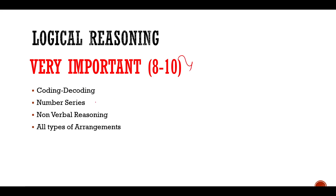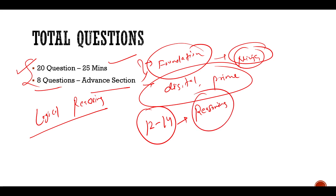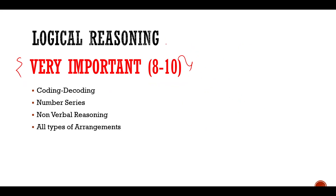To crack TCS NQT, you should score at least 12 to 14 questions correctly in reasoning out of 20. Of those, 8 to 10 questions will come only from these four key topics. So if you prepare properly for just these four topics, you will be getting 8 to 10 questions from them alone. These are the most important topics for logical reasoning.